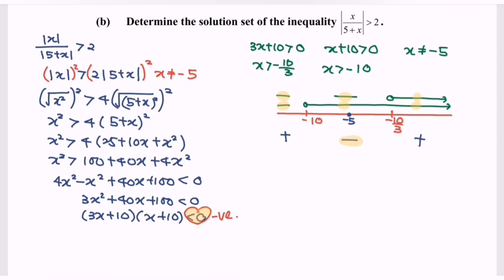So finally, x such that the value of x is greater than negative 10 and less than negative 5, or the value of x is greater than negative 5 and less than negative 10 over 3. So here will be the answer for the solution set.